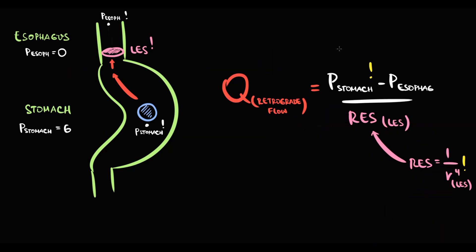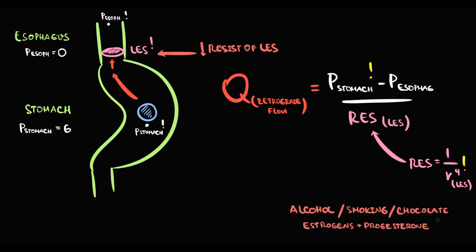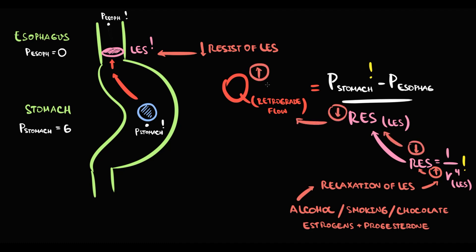Sometimes something can go wrong. There are risk factors that decrease the resistance of the lower esophageal sphincter. Alcohol, smoking, chocolate, estrogens, and progesterone all cause relaxation of the lower esophageal sphincter. With relaxation, the radius increases, thereby resistance decreases, and because resistance decreases, flow increases. In this relaxed state, stomach content passes the lower esophageal sphincter and enters the esophagus — the presence of stomach content inside the esophagus is what we call GERD.